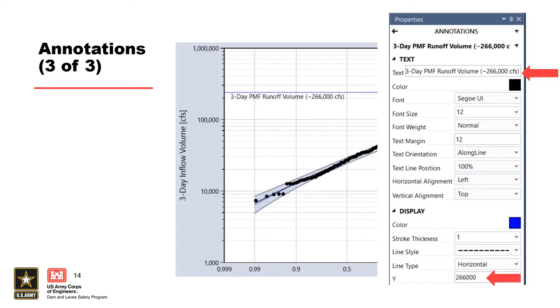Another common annotation is a horizontal line. The text, format, and location where the line crosses the y-axis can be updated in the properties window.